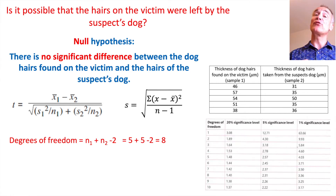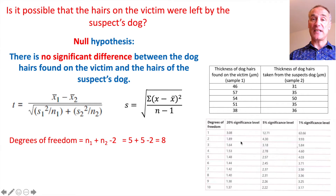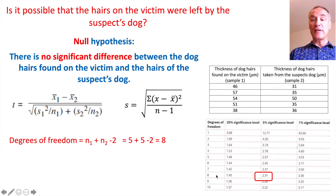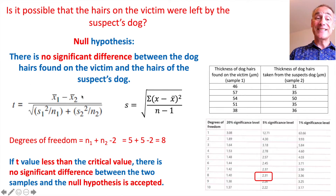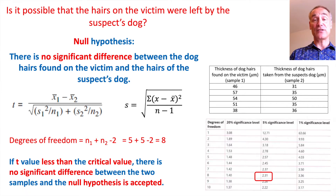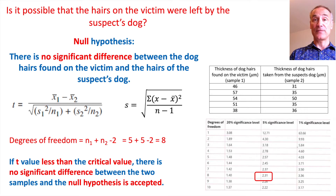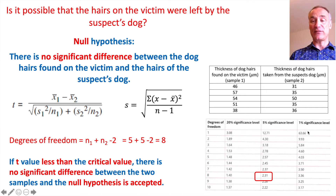Next we look at the critical value — there are different values for different degrees of freedom and different confidence levels. At a five percent significance level with eight degrees of freedom, the critical value is 2.31. If our t value is less than 2.31, we accept the null hypothesis — no difference between the two samples. If the t value is greater than 2.31, there is a significant difference and we're 95 percent confident. Some scientists use a one percent significance level, meaning 99 percent confidence, but that requires a higher critical value.